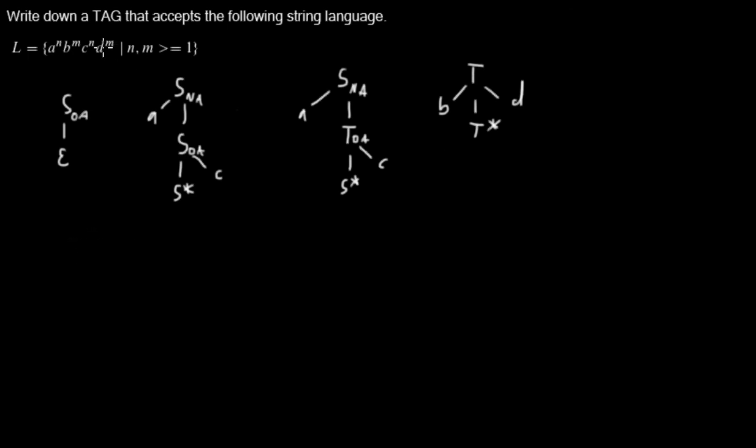Now, how does this tree adjoining grammar generate a string language? Let me just show you. I will start with this initial tree.